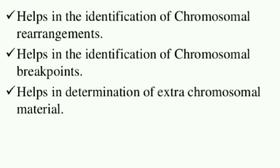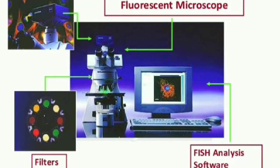So how do we visualize the chromosome painting? We visualize it by using a fluorescent microscope. A fluorescent microscope should have a CCD camera, filters, and it is specialized with FISH analyzing software.